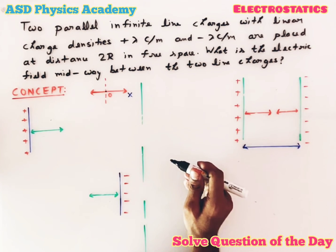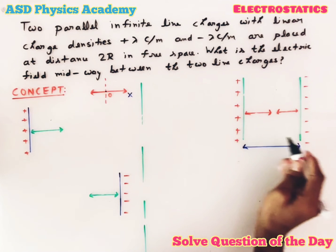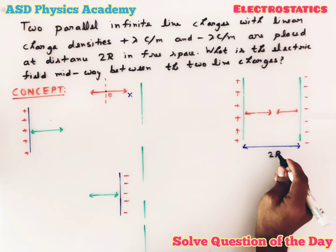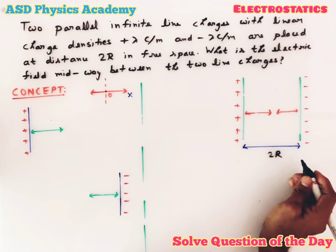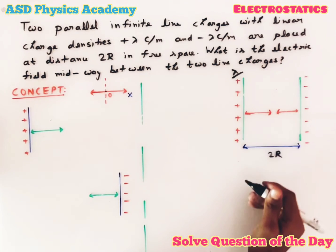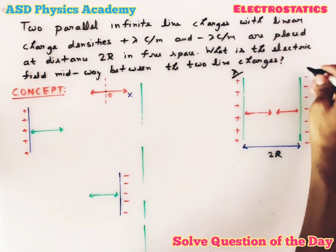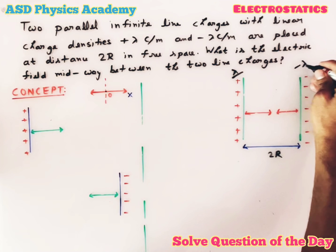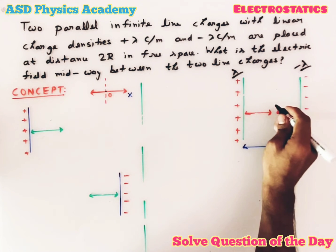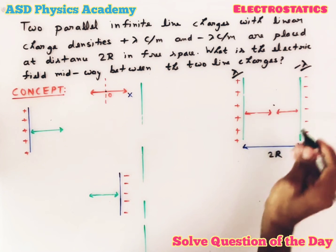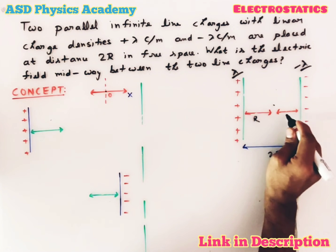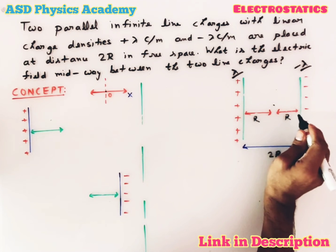According to the question, I have taken two parallel infinite line charges separated by distance 2r. The first line charge has linear charge density lambda and the other has linear charge density minus lambda. To calculate the electric field at the midpoint, that means at a distance r from the positive line charge and similarly at a distance r from the negative line charge.